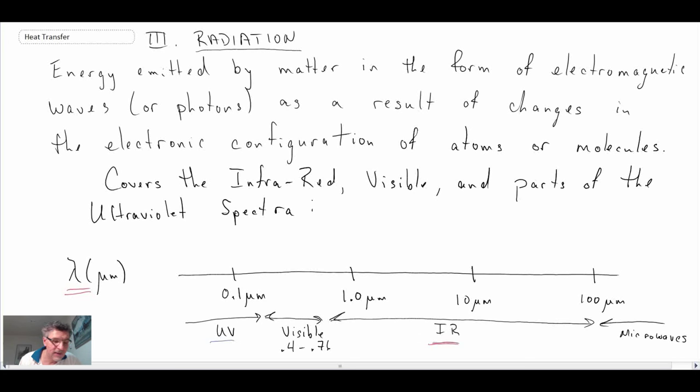Now thermal radiation, you could say, goes anywhere from about 0.1 microns up to about 100 microns. So this is where thermal radiation exists, or is radiation heat transfer.